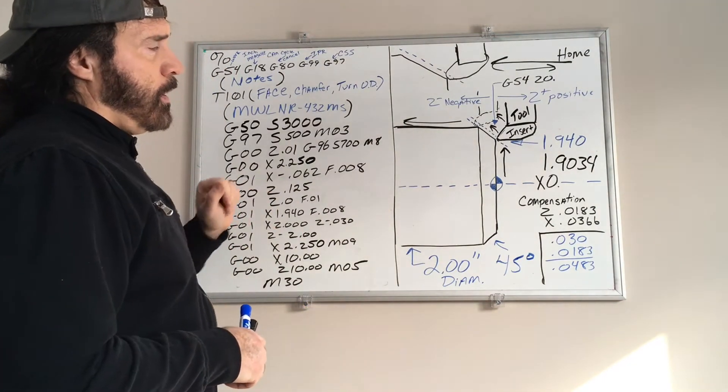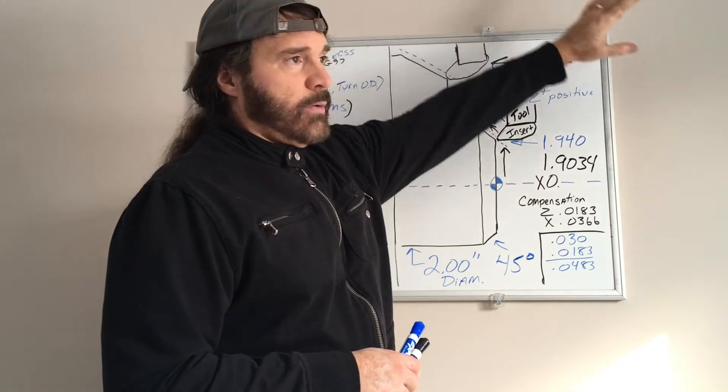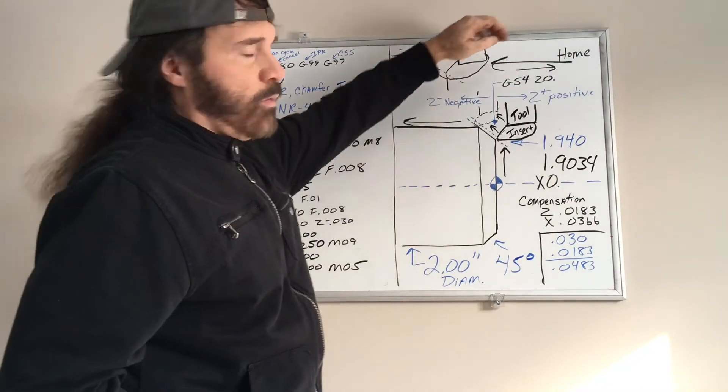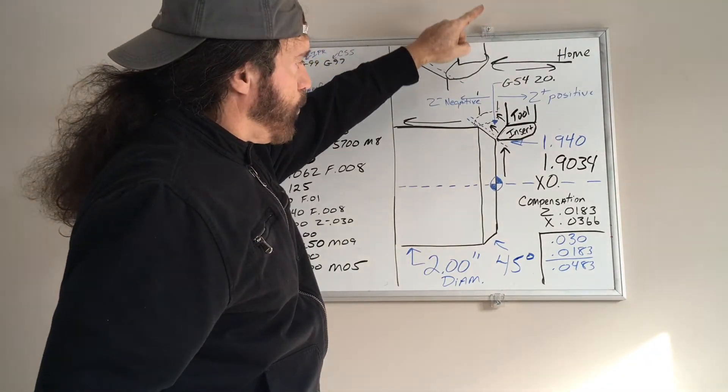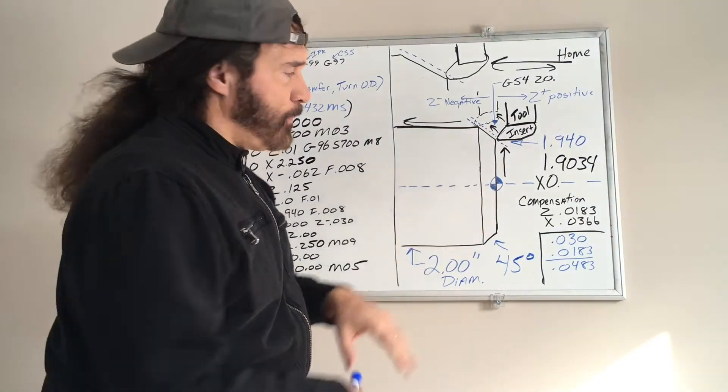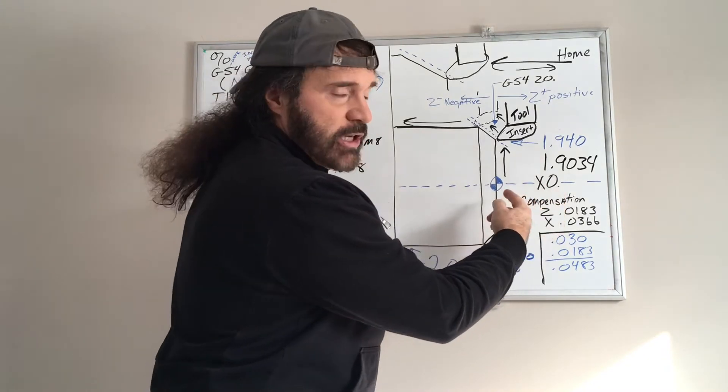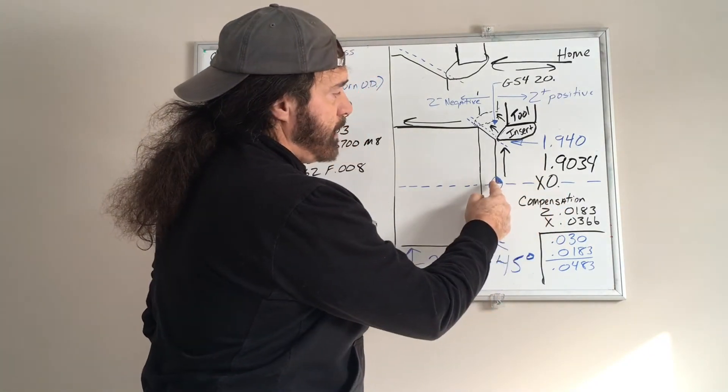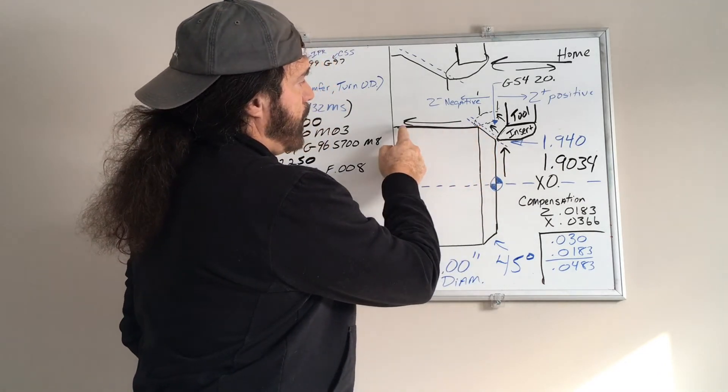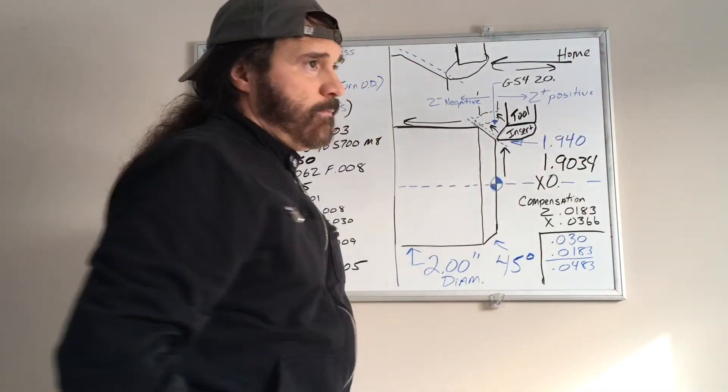So what we're doing, our turret is over here. We're going to come in, rapid in, we're going to rapid down. We're going to do a light skim cut. We're going to rapid out a little bit. Now we're going to set up cutter comp, face into the part, come up, do a chamfer, come across, come out, rapid up, rapid home. Call it done.